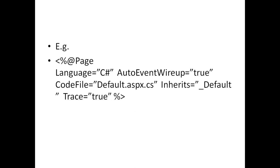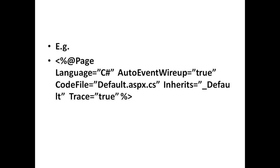ValidateRequest is the boolean value that indicates whether all input data is validated against a hardcoded list of values. An example of defining a Page Directive is: Page, then Language specified as C#, AutoEventWireup is true, CodeFile is default.aspx.cs, then Inherits Default, and Trace is true. Here you can add attributes and their values.